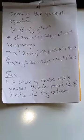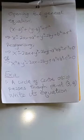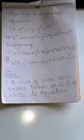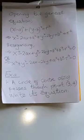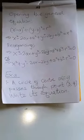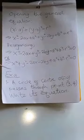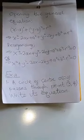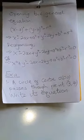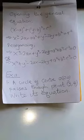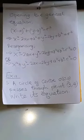Now we are going to look at examples involving the equation of a circle. Example one: a circle with center (0, 0) passes through the point (3, 4). Write its equation.